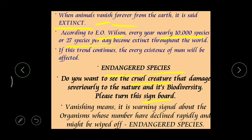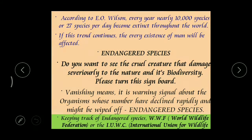Endangered species means it is a warning signal about organisms whose number has declined rapidly and might be wiped off. They are present in the past and even today, but their numbers are decreasing very rapidly. If we are not taking care of them, in the coming future these animals will become extinct. Endangered species means they are present now, but when in the future they become totally disappear, such organisms can be called endangered species.